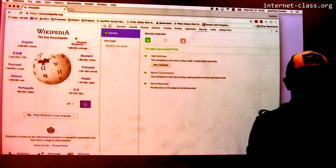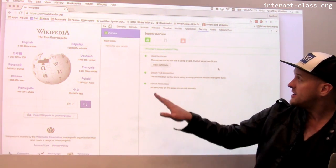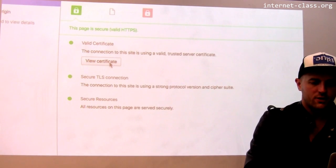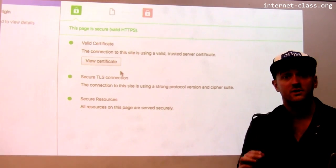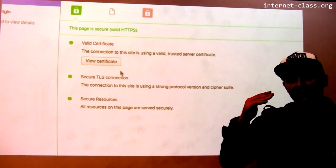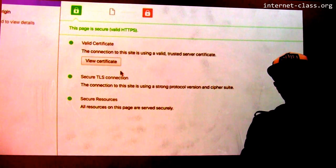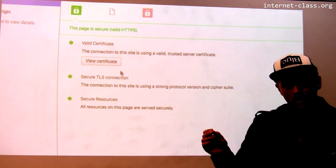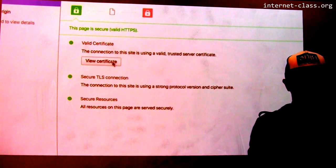But if I click on this, it'll actually start to give me more information. So the page is secure. It's valid HTTPS. And the first thing it says here is view certificates. So the connection to the site is using a valid trusted server certificate. What does that mean? It means that a certificate authority that I trust signed the key that I'm using. And so I believe that that key actually belongs to wikipedia.org and not to some other random person who's trying to intercept my traffic.